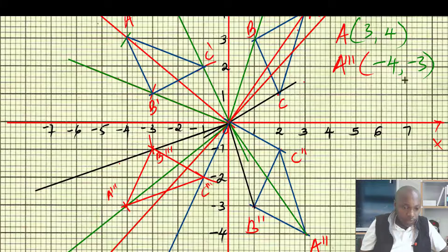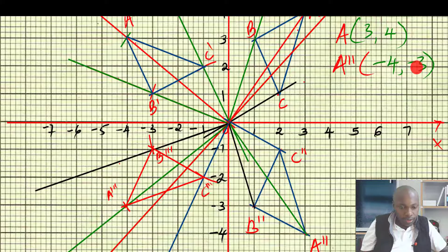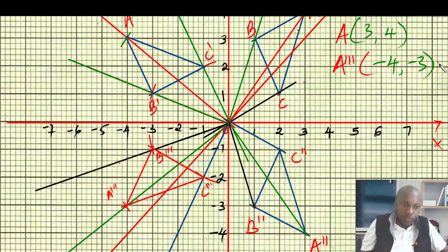You can see that these points have been reversed or interchanged — that's the correct term — and also the signs have changed. So (3, 4) maps to (-4, -3): the x and y coordinates are reversed and they also change sign.